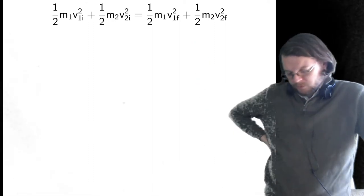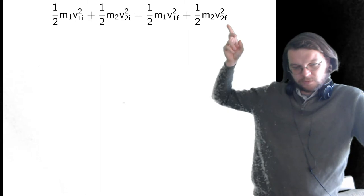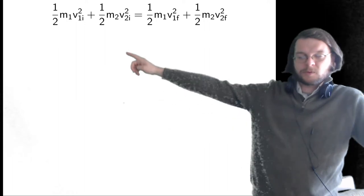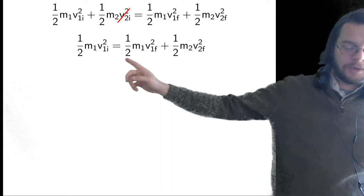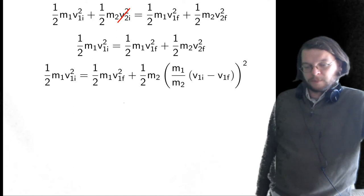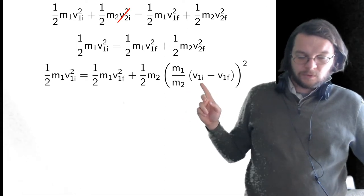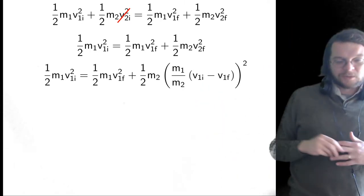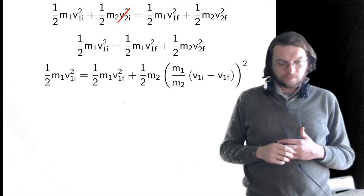Now we look at the energy equation and substitute in what we learned from momentum conservation — specifically what we know about V2F. Remember that object two is initially at rest, so the expression simplifies. We substitute V2F into the energy equation. Now we're in business because we have an equation where we know V1I — we're the ones setting up this experiment, so we're allowed to know the initial velocity — and the hard part is predicting V1F. We've substituted that in; it's starting to look messy, but we can multiply everything by 2 to eliminate the one-half factors.